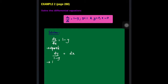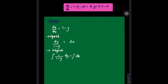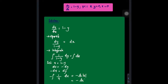Integrate both sides: ∫1/(1−y) dy = ∫dx. Use substitution: let u = 1 − y, then du = −dy, so −du = dy. Therefore we integrate −1/u du, giving −ln|u| = −ln|1 − y|. So −ln|1 − y| = x + C.